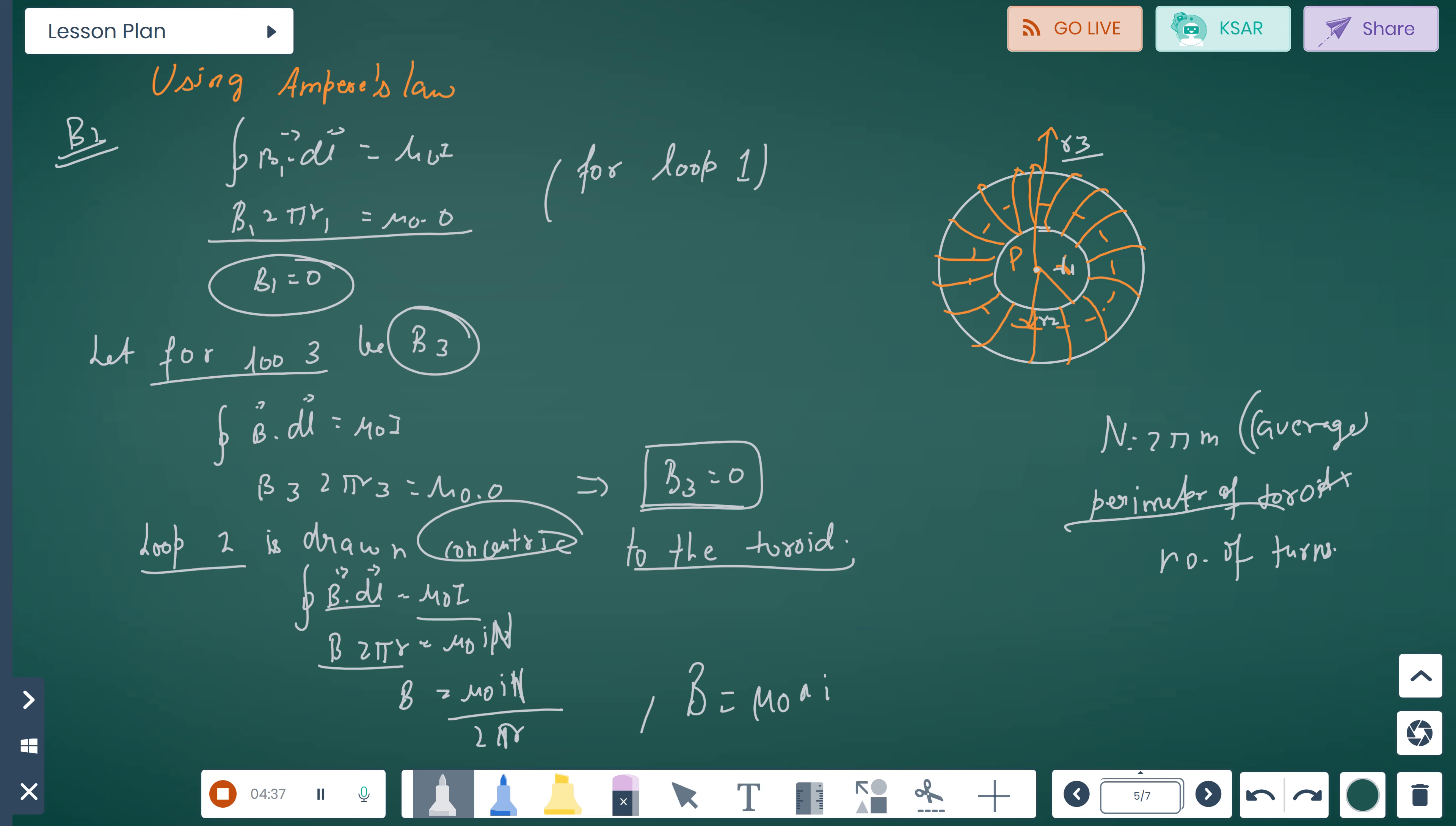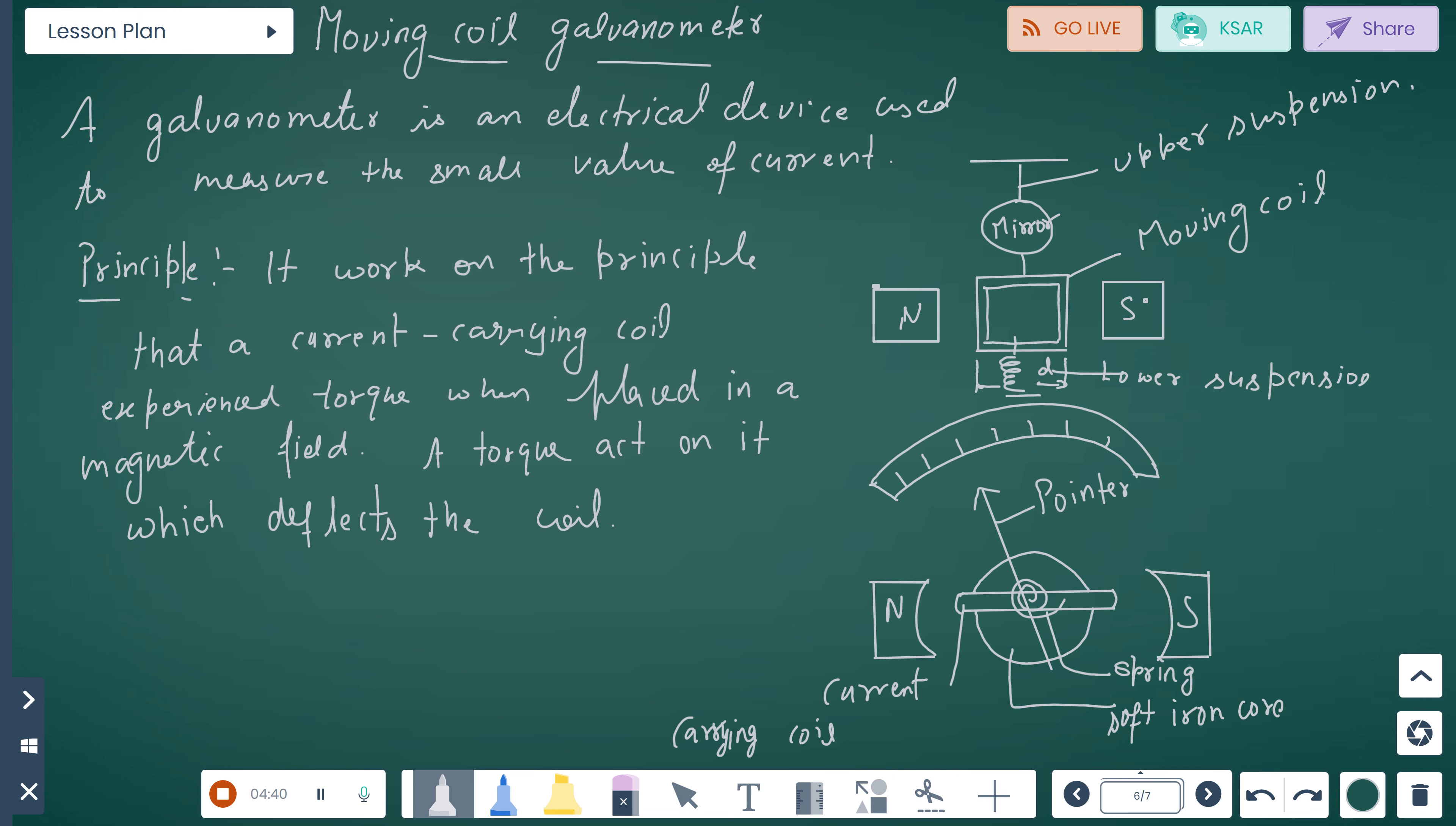Now moving coil galvanometer. A galvanometer is an electrical device used to measure small values of current. Principle: It works on the principle that a current-carrying coil experiences torque when placed in a magnetic field.